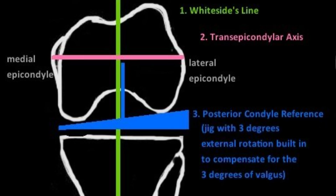Alternatively, you can use other landmarks to orient the cutting jig for neutral rotation. Whiteside's line is a vertical line parallel to the mechanical axis, or the transepicondylar axis — a horizontal line connecting the medial and lateral epicondyles — perpendicular to the mechanical axis. Use one of these three techniques to obtain neutral rotation.